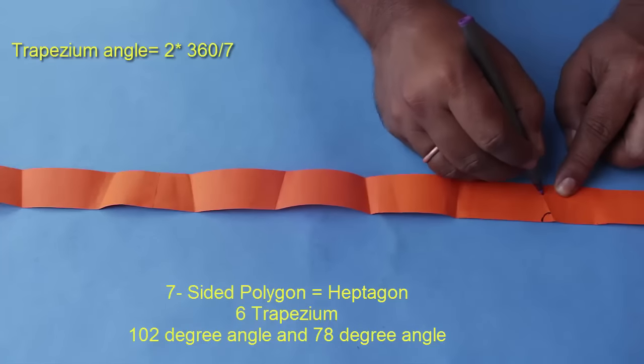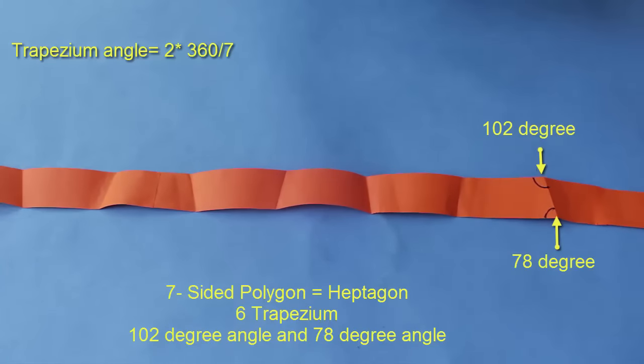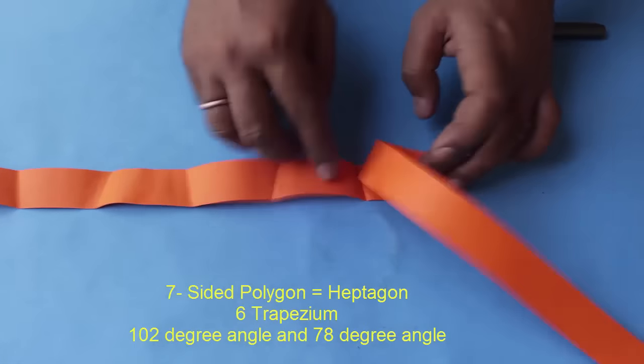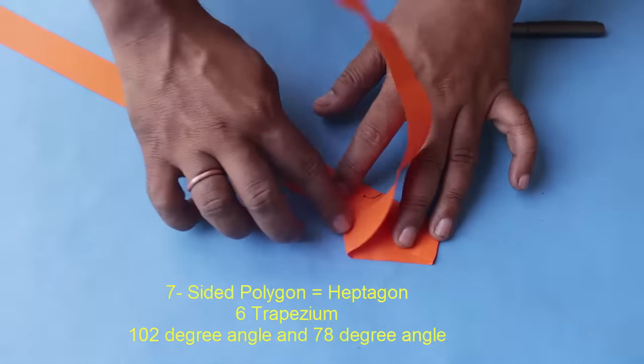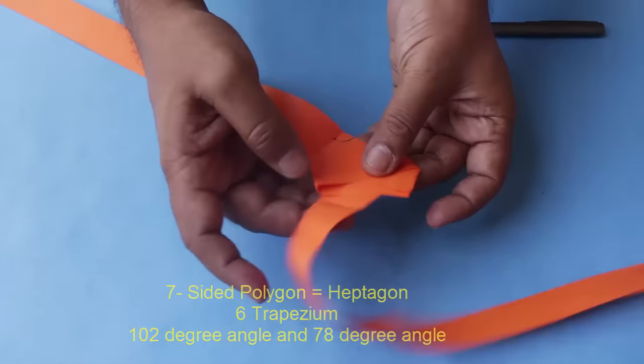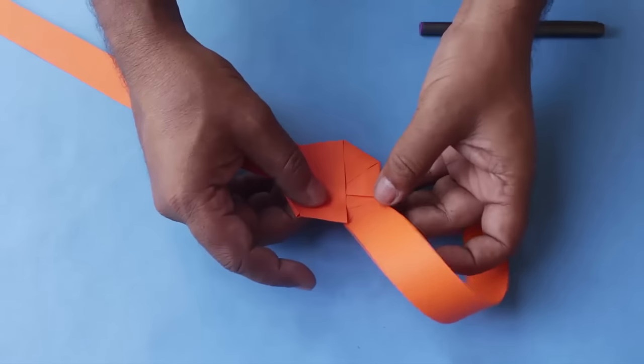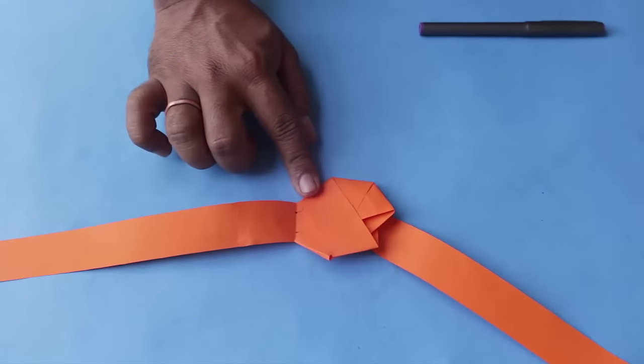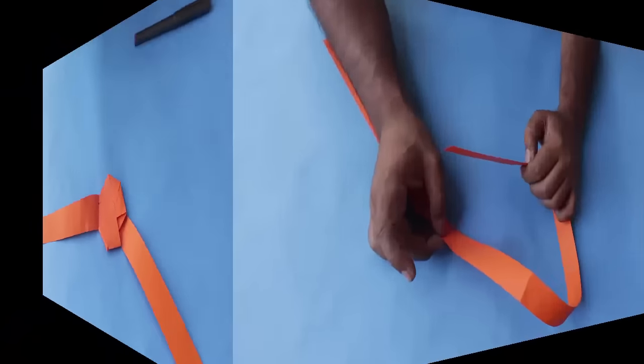When you open these, you will see six inverted trapeziums back to back. The angle of these trapeziums is two times 360 by seven, which is 102 degrees. Of course, the other angle will be 78 degrees, and you can see how you can fold the trapeziums back to make the heptagon.